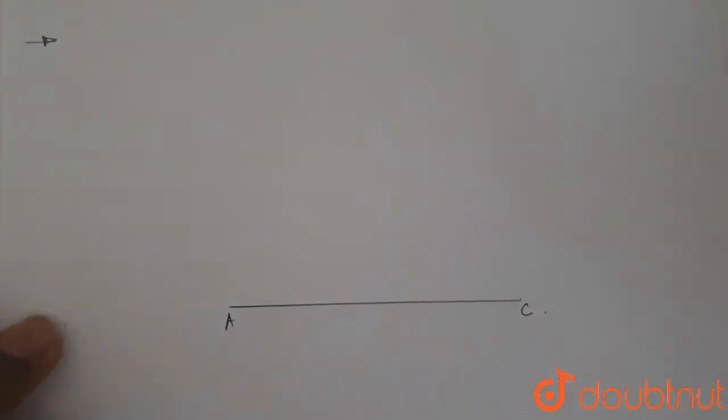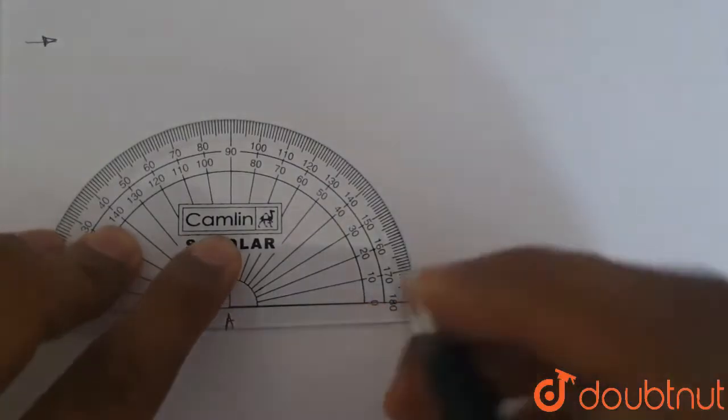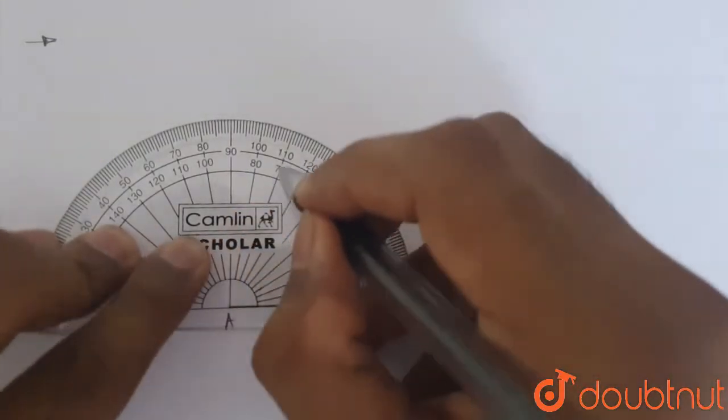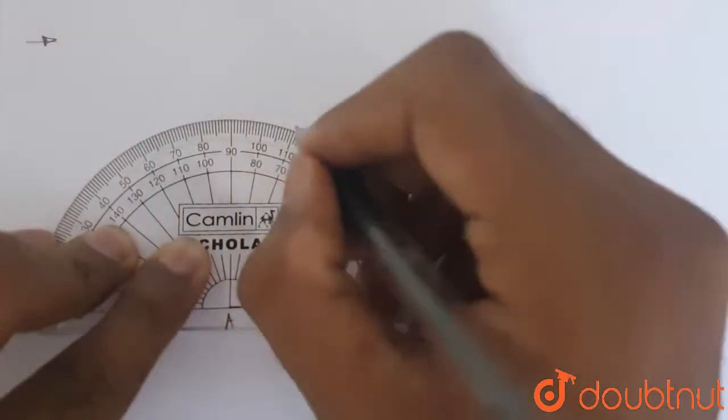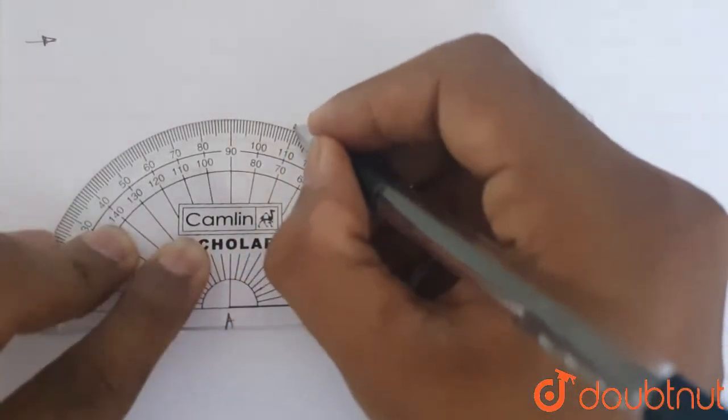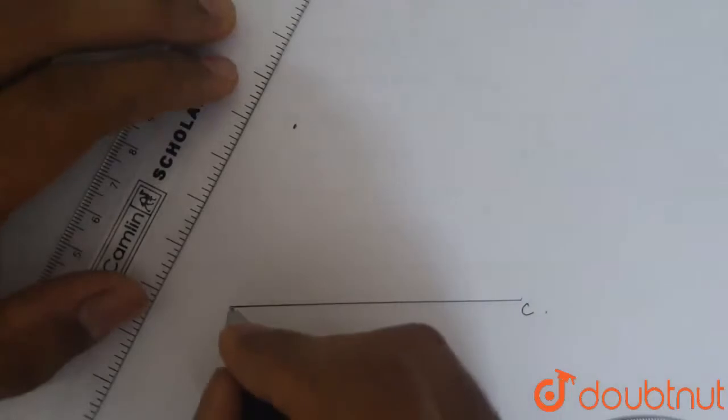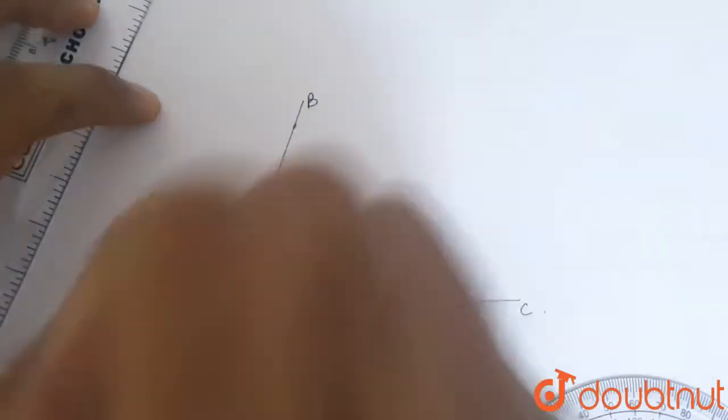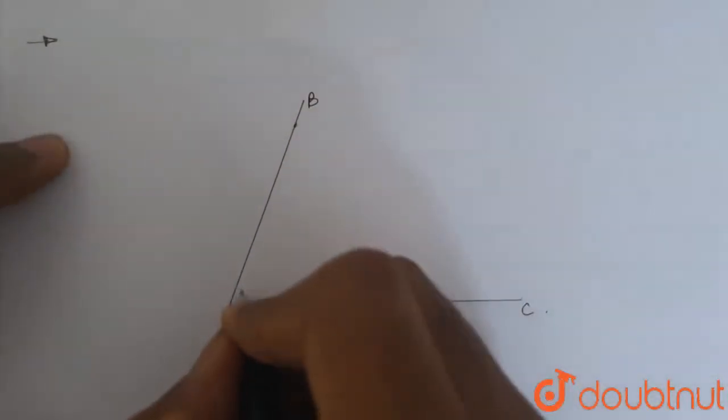Then, using a protractor, we make side AB. We mark, first mark for a 70 degree angle. So, this is 70 degree. And hence, this becomes side AB which is 70 degree.